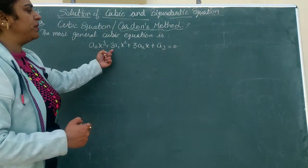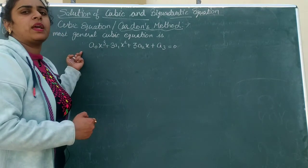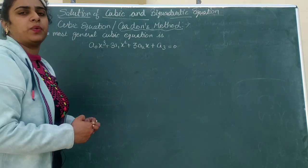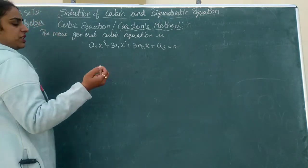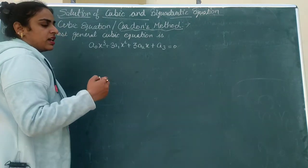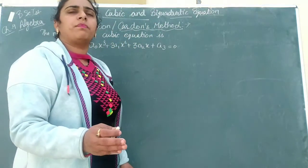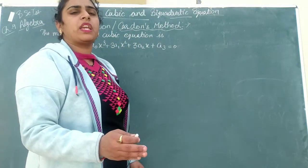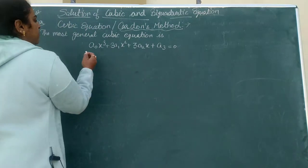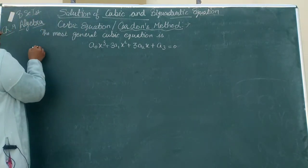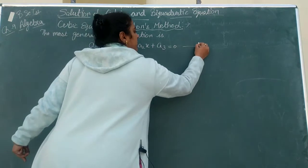The most general cubic equation is a₀x³ + 3a₁x² + 3a₂x + a₃ = 0. We translate this into a reduced cubic equation — this is Equation 1.